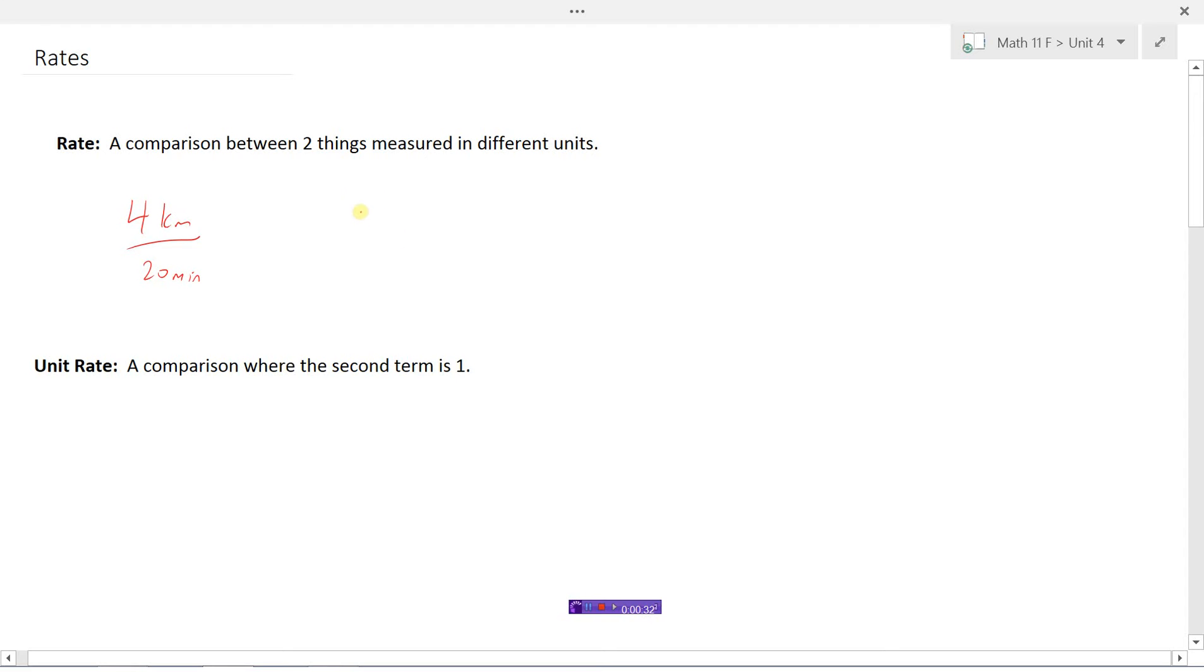Or maybe here's another rate. There are 12 baskets per 22 seconds. Say it's in a basketball thing, somebody's shooting 12 baskets per 22 seconds. Those are rates because we have two different units. We've got kilometers and minutes, and here we have the number of baskets and the number of seconds.